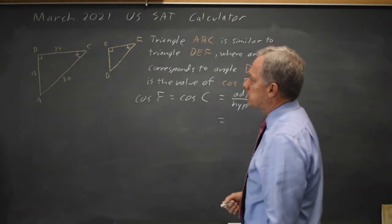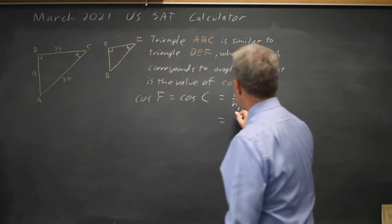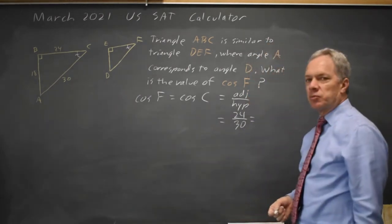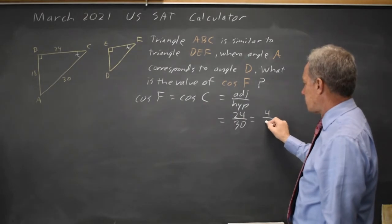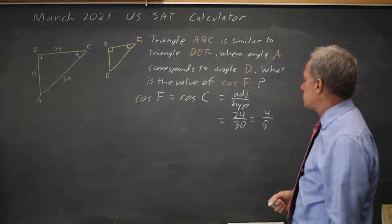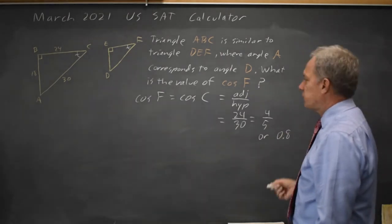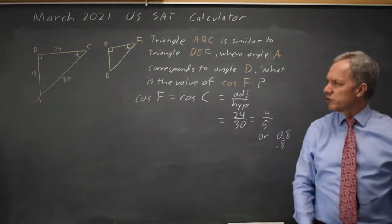For triangle ABC, the side adjacent to C is 24 and the hypotenuse is 30. And those are both multiples of 6. 24 is 4 times 6 and 30 is 5 times 6. So this is 4 fifths or .8 if you wish. I would just grid in 4 fifths.